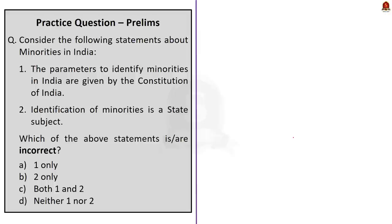Now, let us take up this first question. Consider the following statements about minorities in India. First statement, the parameters to identify minorities in India are given by the Constitution of India. This statement is incorrect because the Constitution only mentions the term minority, but it does not define any parameter for that. And even the National Commission for Minority Act of 1992 does not define or mention any parameters for the same. So, first statement is incorrect. Now, the second statement, identification of minorities is a state subject. This is incorrect because clearly during discussion we saw that it is a subject under the concurrent list, which is the third list in the seventh schedule to the Constitution.